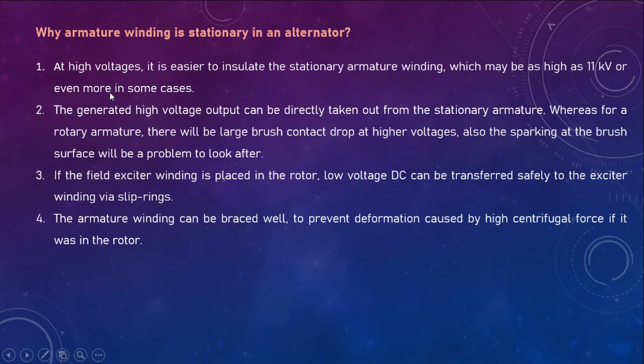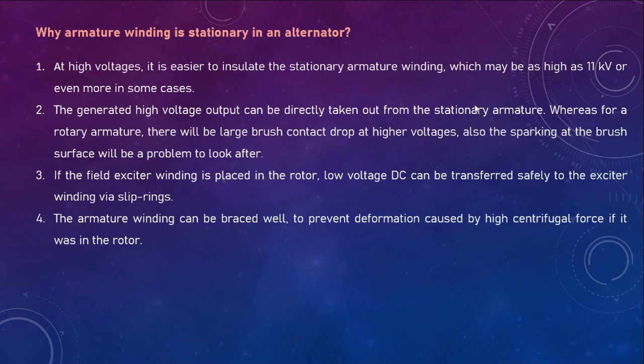The second advantage: the generated high voltage output can be directly taken out from the stationary armature. Since the stator is stationary and the armature winding is stationary in the stator, whatever output voltage is generated can be easily taken out. But if it were placed in the rotor and continuously rotating, it would be very difficult to take out the output power.